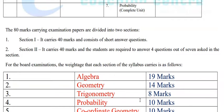The 80-mark examination paper is divided into two sections. Section 1 carries 40 marks and consists of short answer questions. Section 2 also carries 40 marks, and students are required to answer 4 questions out of 7 questions asked in that section.